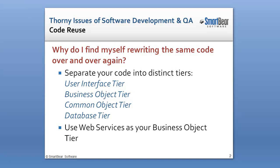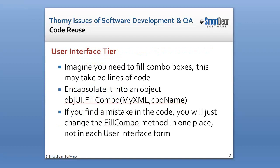I normally have a tier called the user interface tier. I have another tier called the business object tier. I have a common object tier that allows you to reuse things between all of the different tiers, and then I have a database tier. And finally, I use web services to broker your business objects, and the reason for that is it allows you to use those web services anywhere in the world.